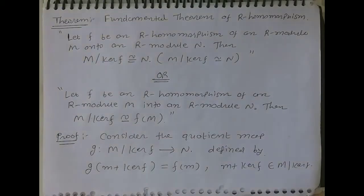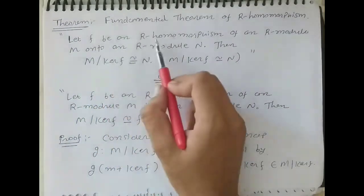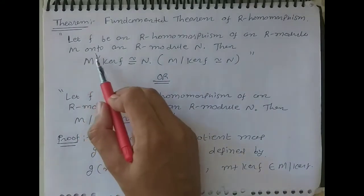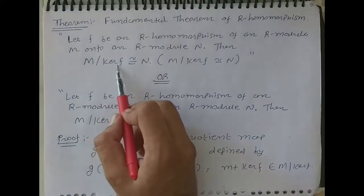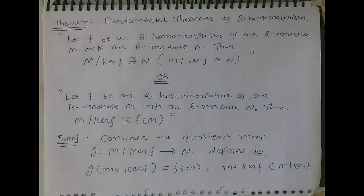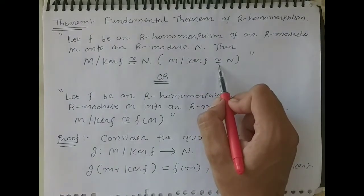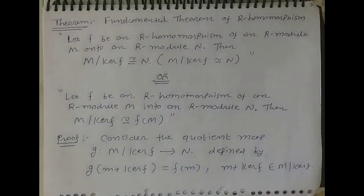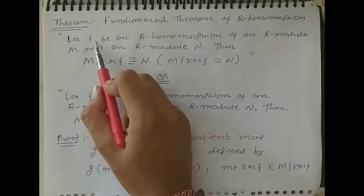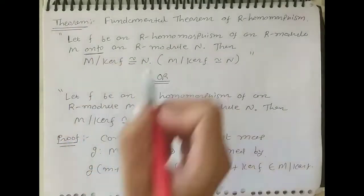In this lecture, we give the proof of the fundamental theorem of R-homomorphism. So first, the statement of this theorem: let F be an R-homomorphism of an R-module M onto an R-module N. Then M modulo kernel of F is isomorphic to N. Here F is onto — this is the first statement.